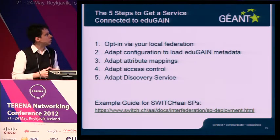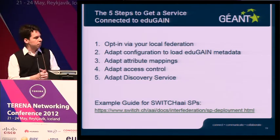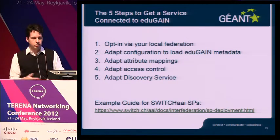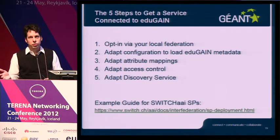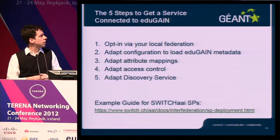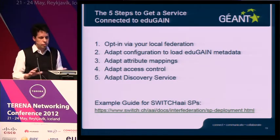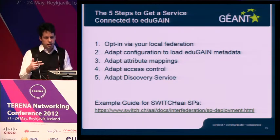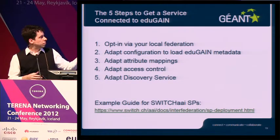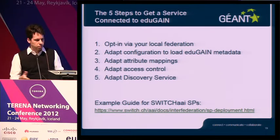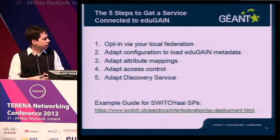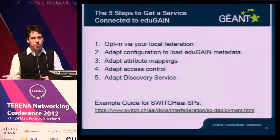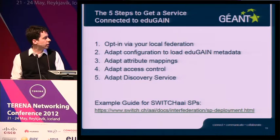What's necessary to get a service into EduGain? First, they have to opt in at the local federation — in this case, Switch AAI. Then you have to adapt the configuration — in our case, the Shibboleth configuration — which means changing the attribute mappings to some extent. You have to adapt the access control. You have to make something that allows EduGain users to choose their organization, so you have to adapt the discovery service. These are more or less the five steps that are necessary. All of these steps are explained in greater detail on the service provider deployment guides that we created for inter-federation.